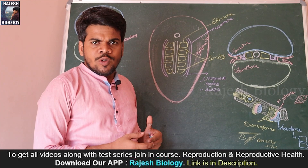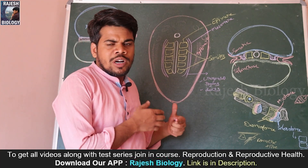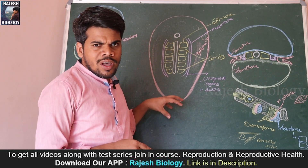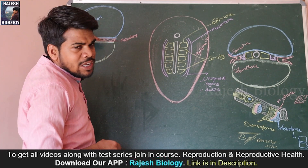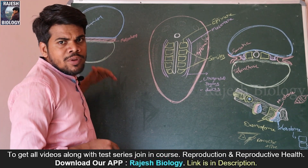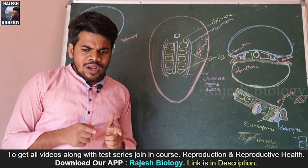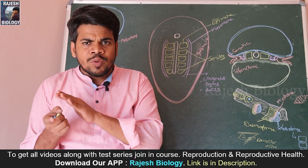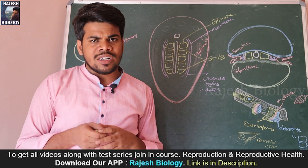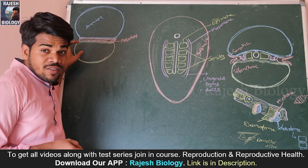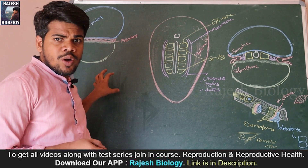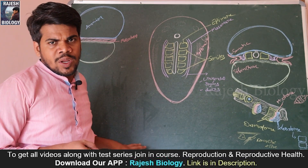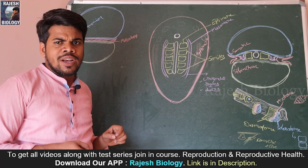We already completed a few concepts in this topic of human reproduction — like gastrulation, neurulation. We discussed how the outer ectoderm, middle mesoderm, and inner endoderm are formed, meaning how the diploblastic structure is converted into the triploblastic structure by the process of gastrulation. After gastrulation, how the neural tube and notochord is formed — everything we discussed previously.